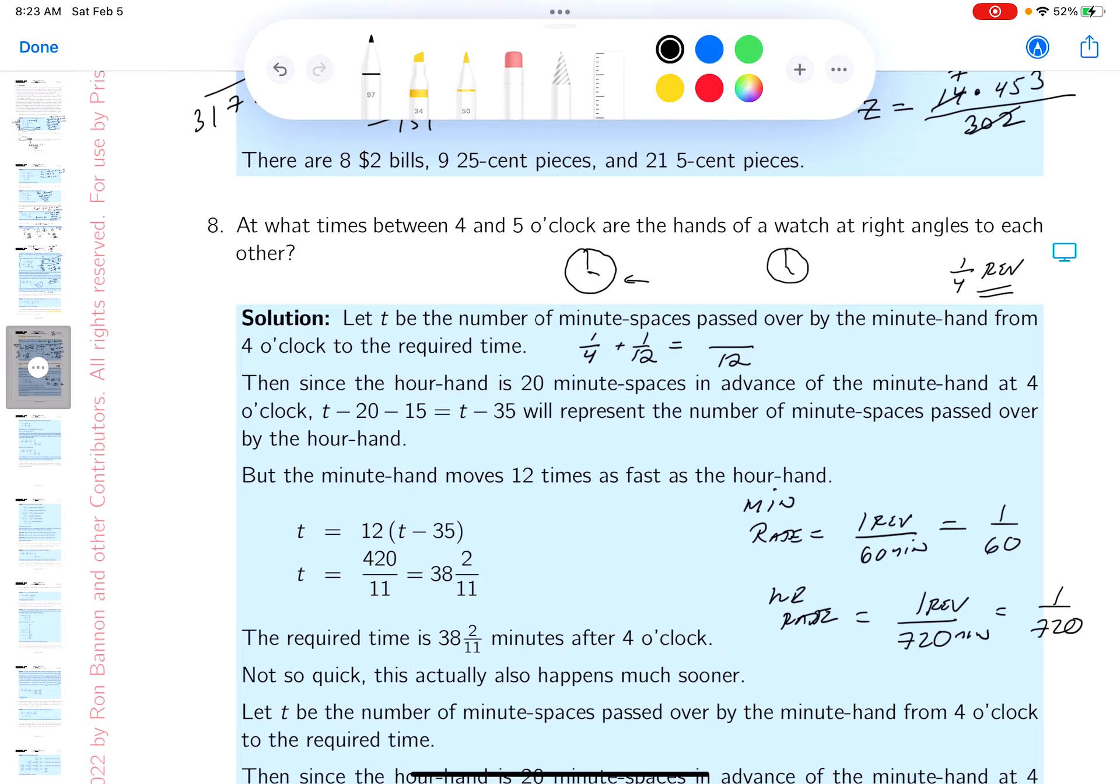That certainly stands to reason - exactly at four o'clock, the hour hand is one third of a revolution ahead. Now I hope you realize that what I'm trying to do is get their difference to be a quarter. I want the difference between those guys to be one quarter of revolution, which is 90 degrees.